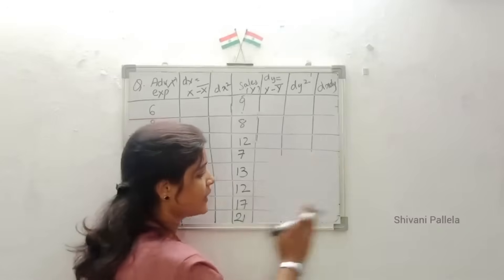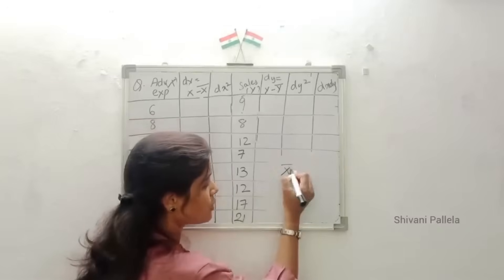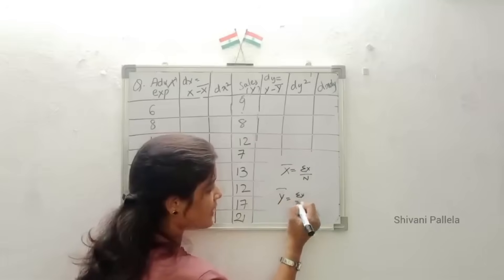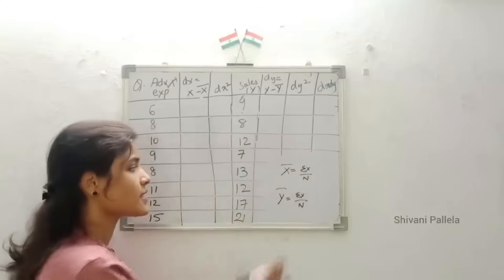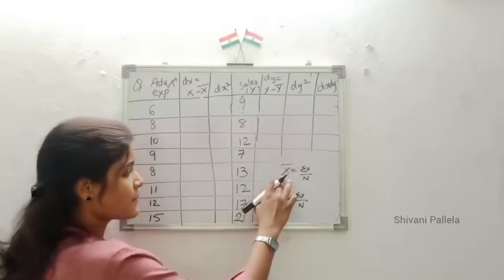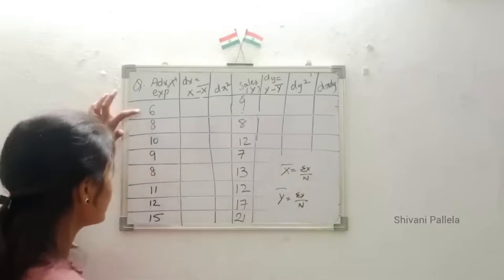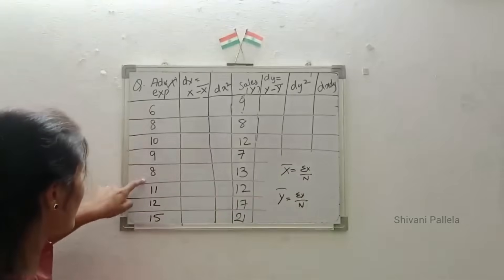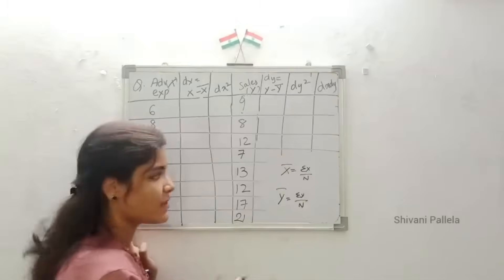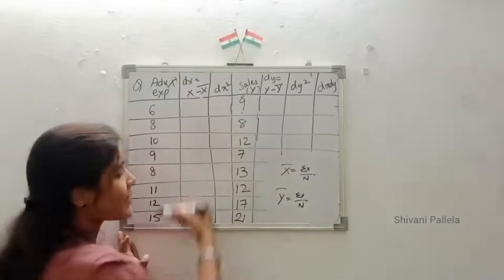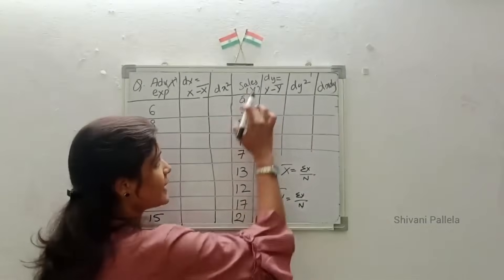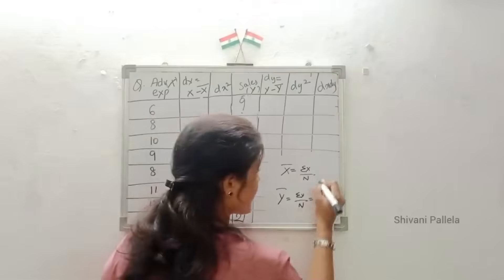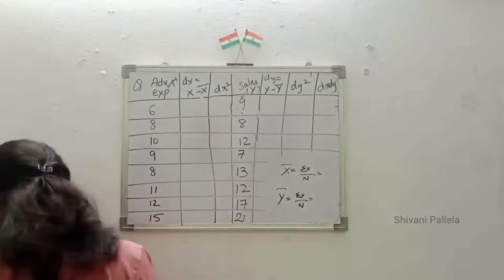To find X̄, the formula is X̄ = sigma X divided by n, where n is the number of observations. Similarly, Ȳ = sigma Y divided by n. Here we have 8 observations — that is n = 8. sigma X is the total of the X column, and sigma Y is the total of the Y column.